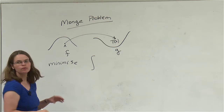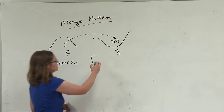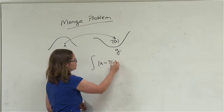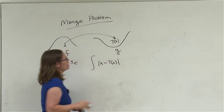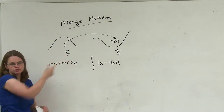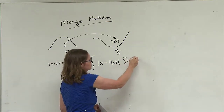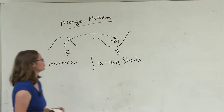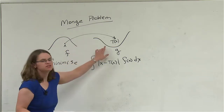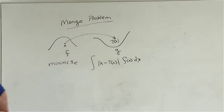For each unit of mass, what Monge originally considered was the distance that we transport a unit of mass, weighted by how much we're actually moving — that's this density f. So we want to find the map that rearranges this density into this density and minimizes some cost function.